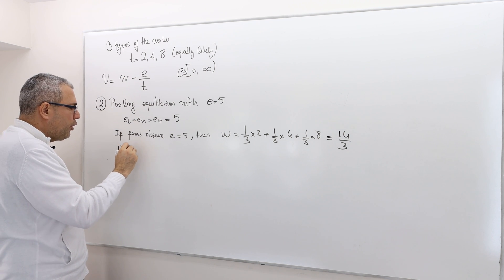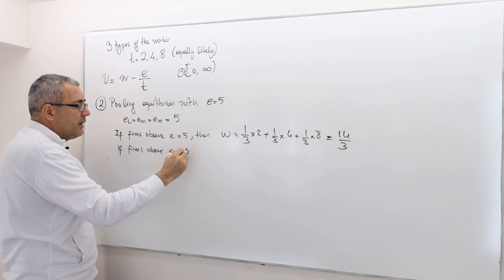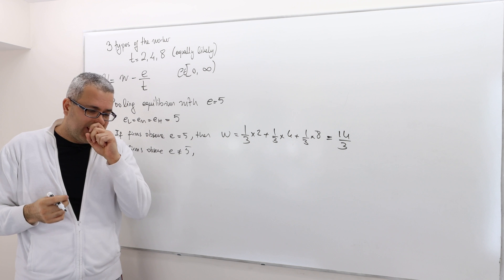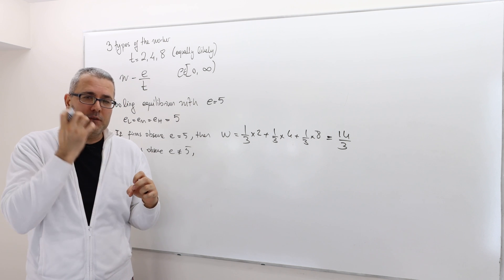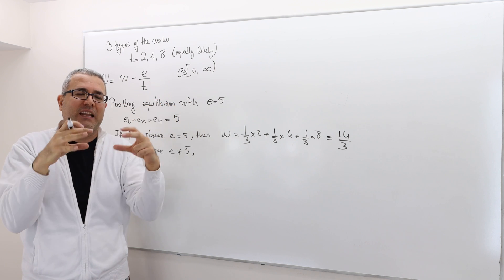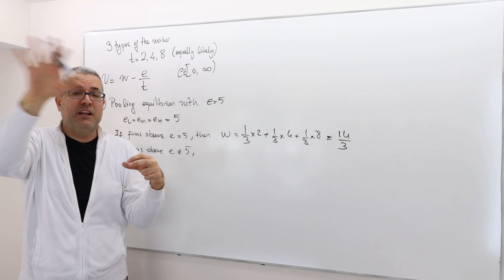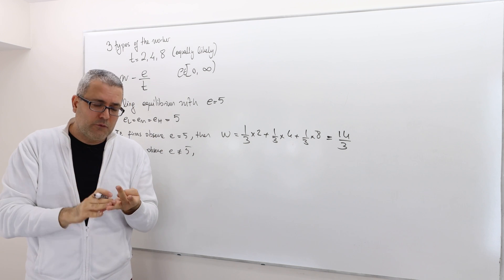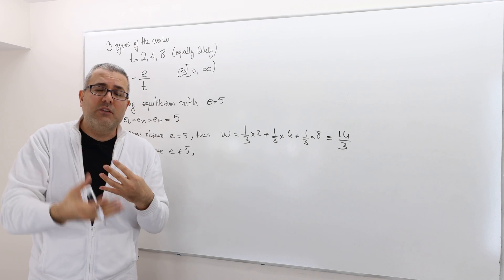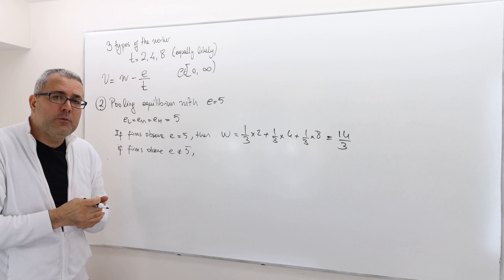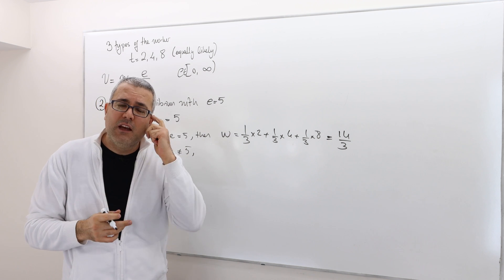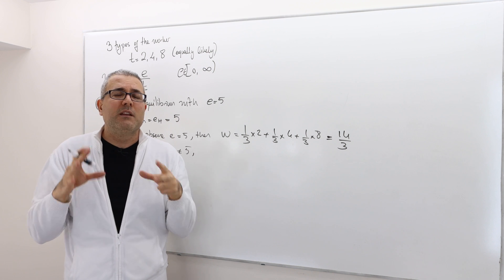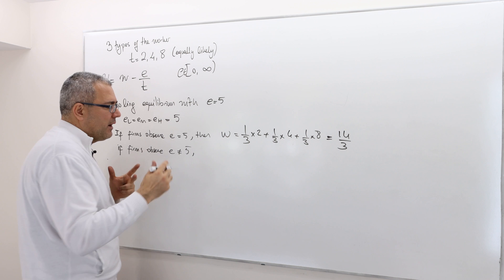What if firms observe E other than 5? If they observe, for example, 0 or 10, what are they going to believe? Well, this is going to be off the equilibrium path, because in the pooling equilibrium all three are supposed to pool and play 5. Any other education level is off the equilibrium path. Therefore, requirement 3 says nothing. Requirement 4 does not impose anything because we cannot calculate the Bayesian updating. So the firms are free to believe anything they want — the beliefs are a free parameter. Therefore, there might be infinitely many pooling equilibria, but we're trying to find just one.